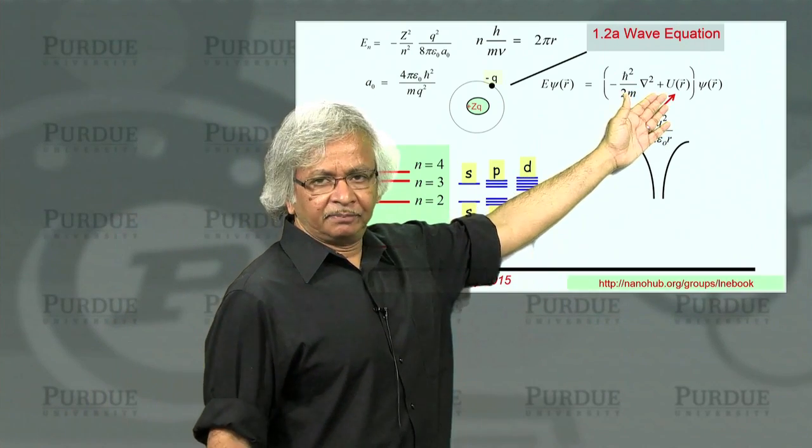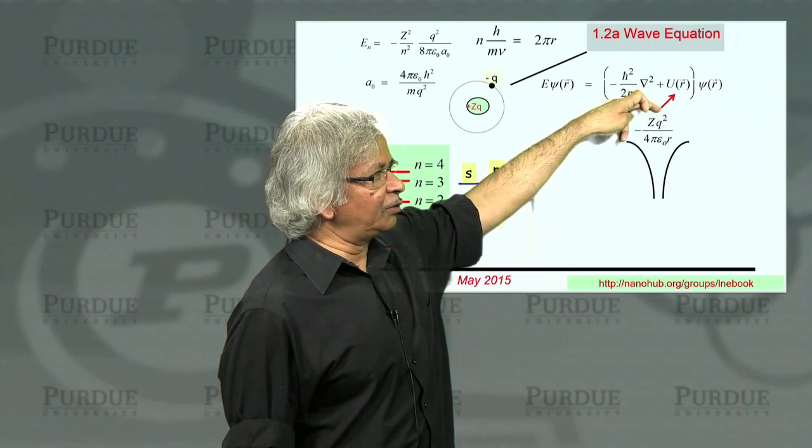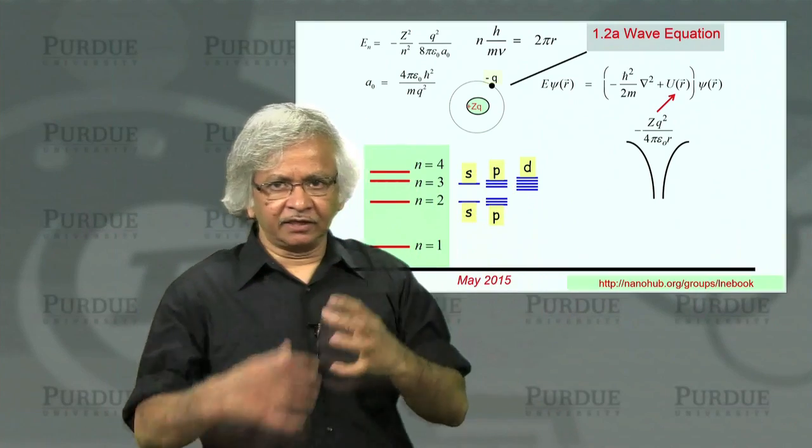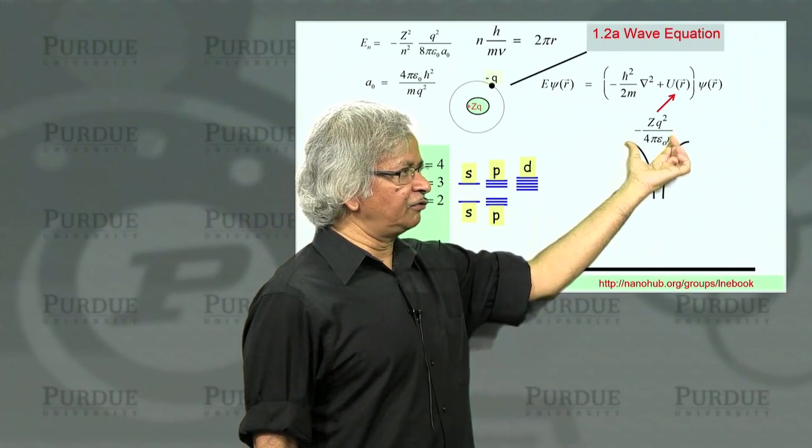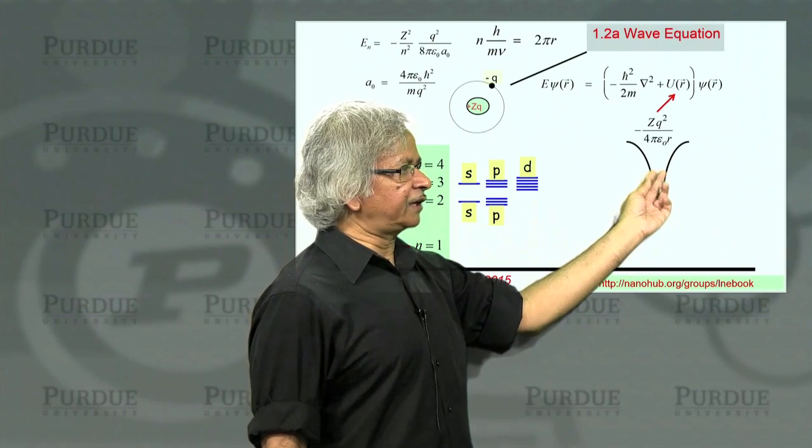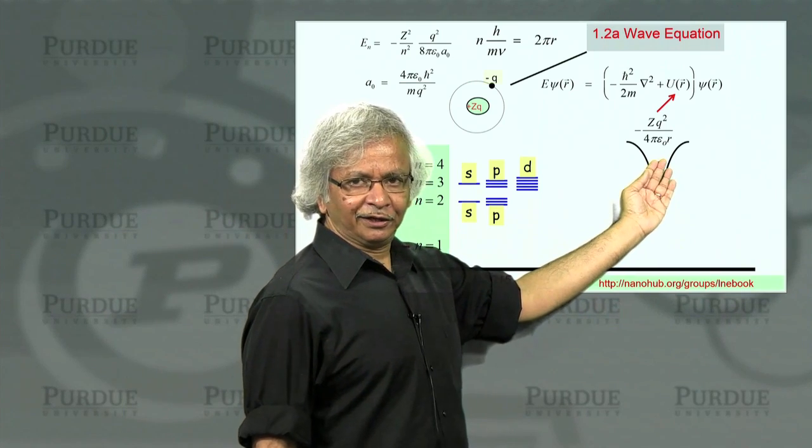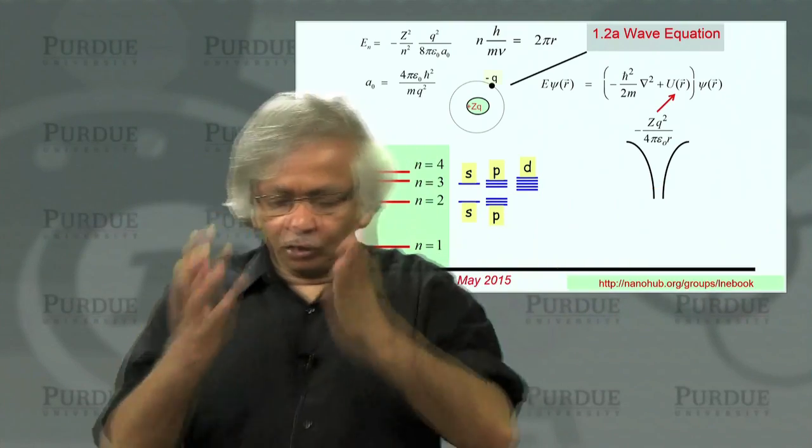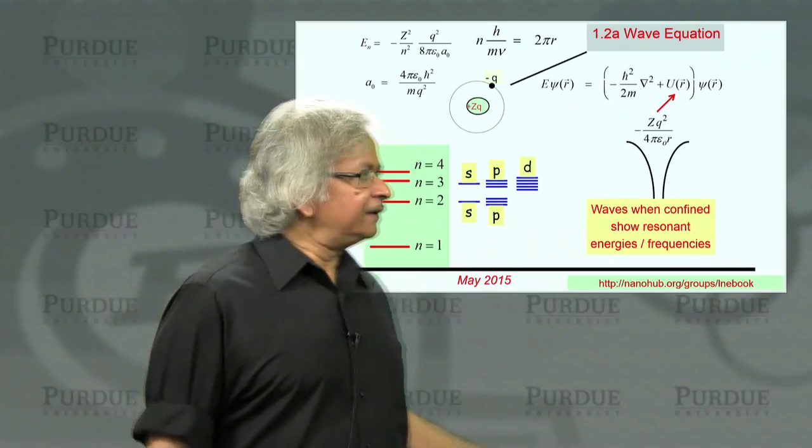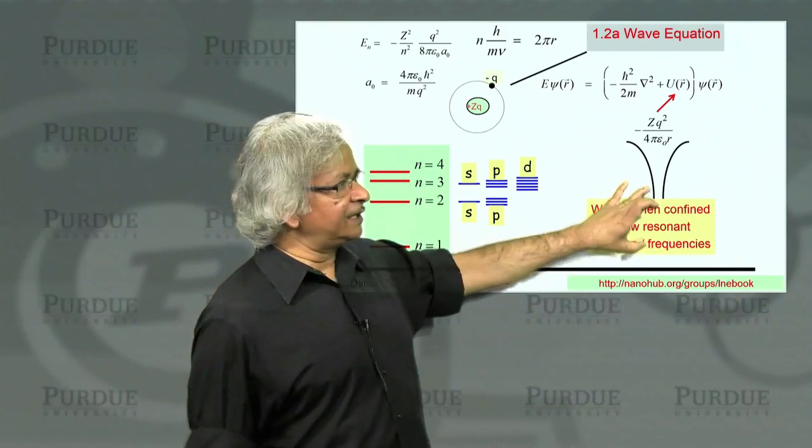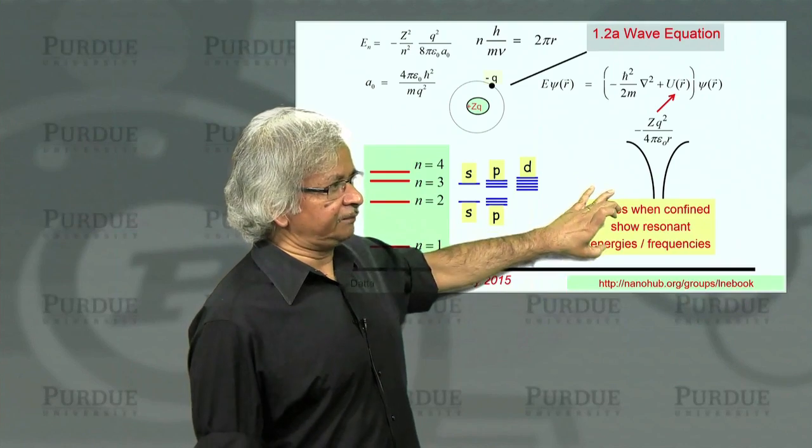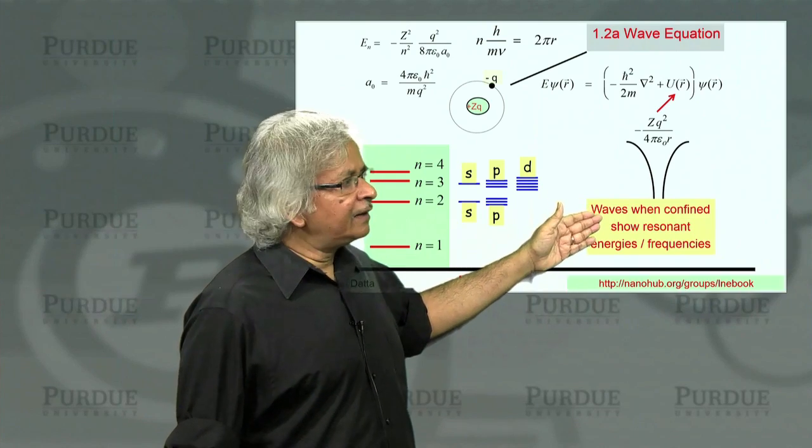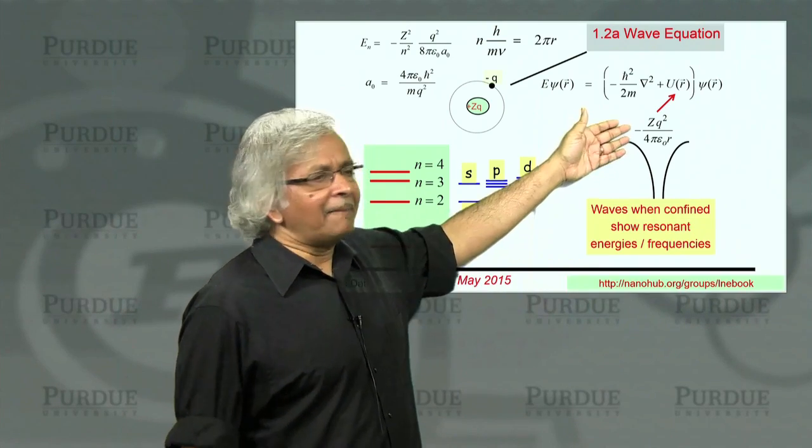When you apply this to the hydrogen atom, you are confining the wave with the Coulomb potential. You have a nucleus here which pulls the electrons towards it. So you have a potential 1 over R that looks something like this, and the electrons want to get stuck in here. This is a complicated potential that keeps it localized in that region. The discrete levels basically come from this confinement of the electron.